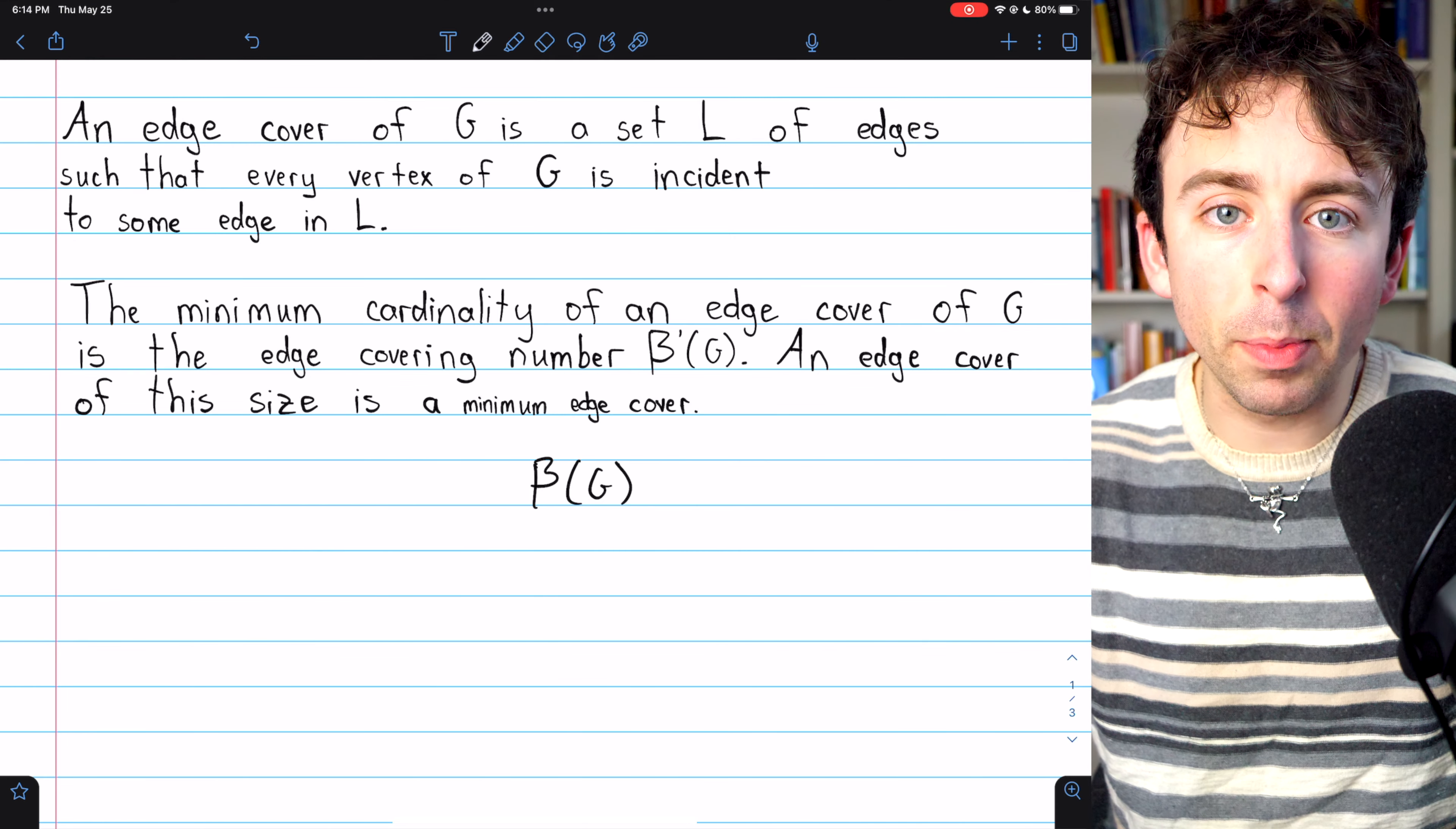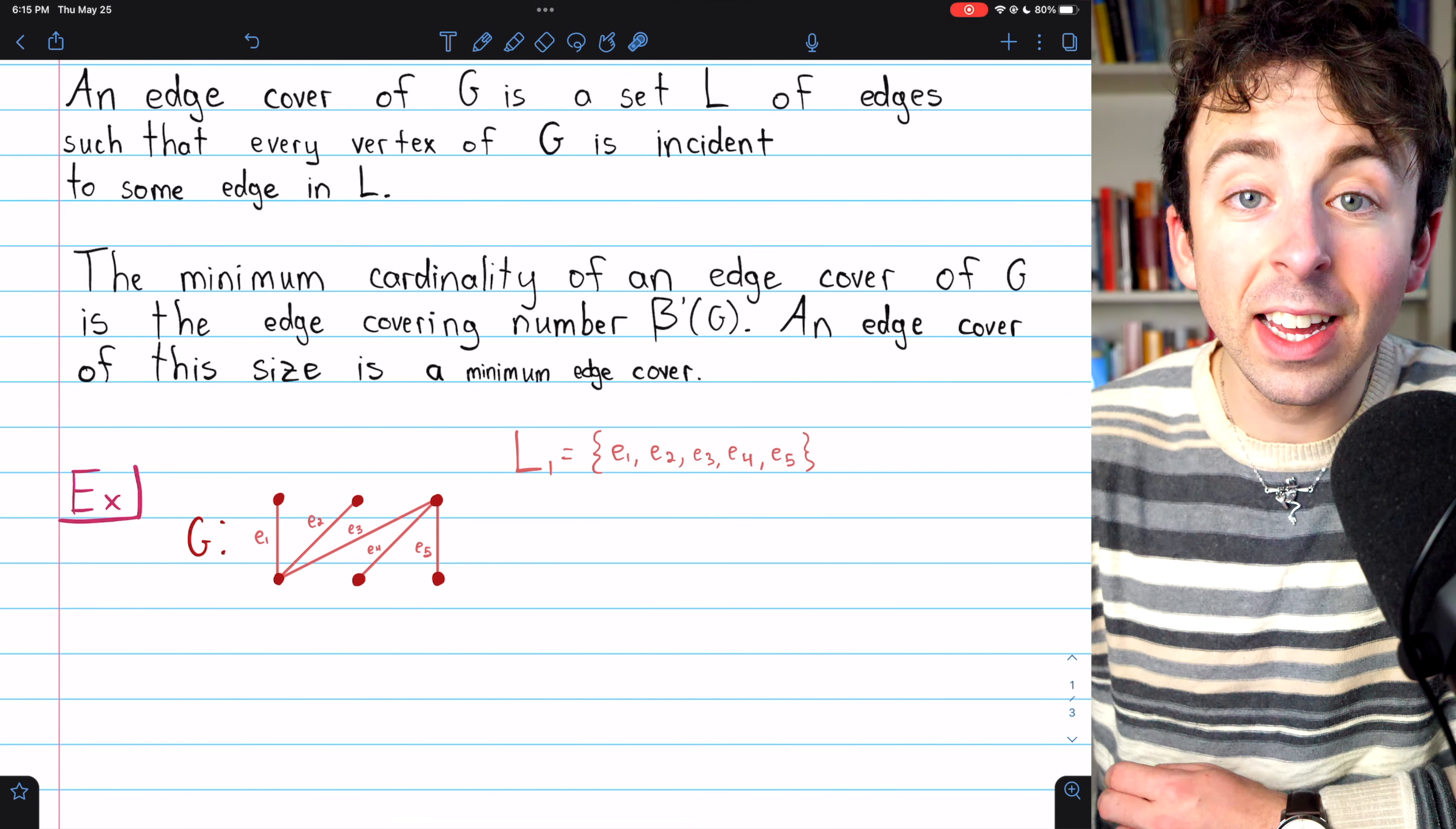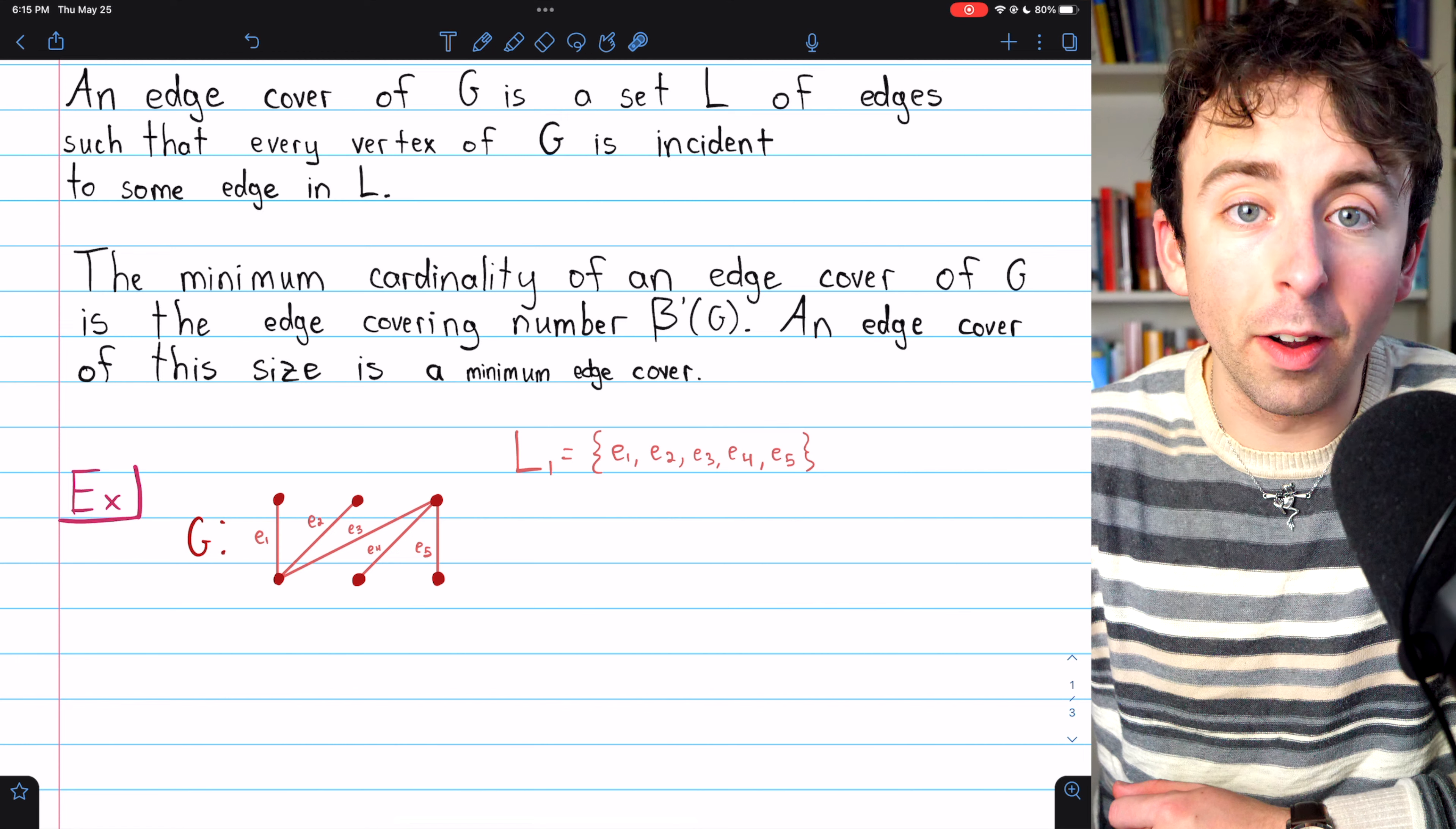All right, let's see an example of some edge covers of a graph. Here is a graph G and an example of an edge cover that we might call L1. Now, this is a pretty obvious edge cover.